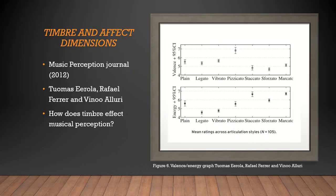Lastly, it will be investigated how varying articulation techniques affect the way we perceive musical expression. In a study published in the Music Perception Journal in 2012 titled, Timbre and Affect Dimensions, authors Tomas Irola, Raphael Fetter, and Vinu Aluri discuss how different aspects of timbre influence our perception of music. The objective of the experiment was to find out what articulations produced low and high valence as well as low and high energy measurements.